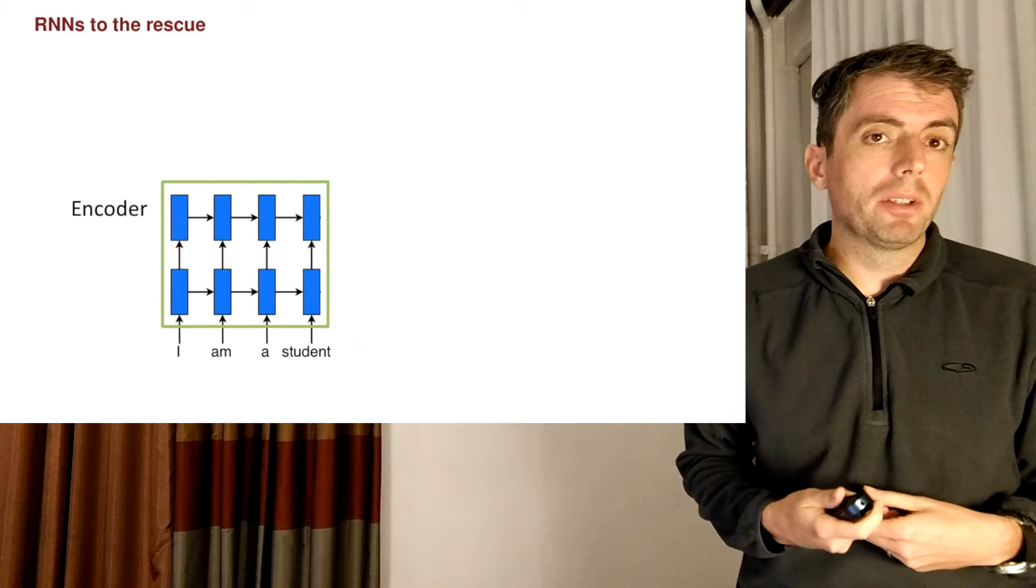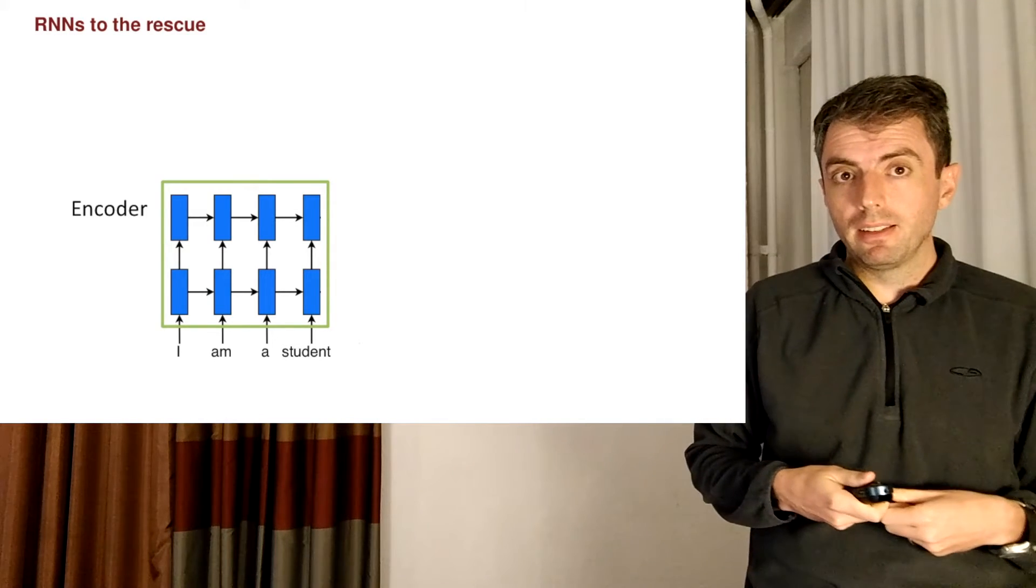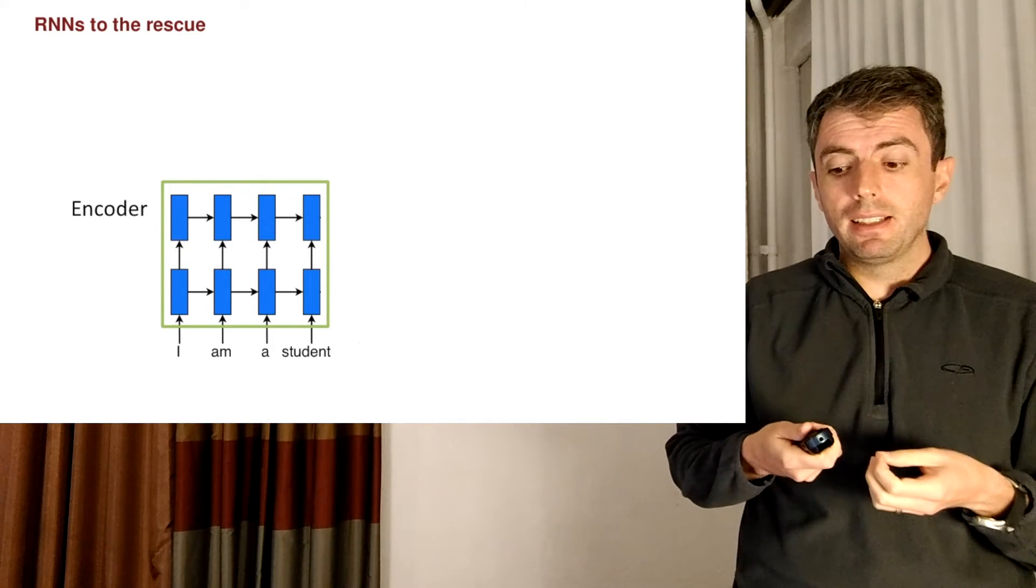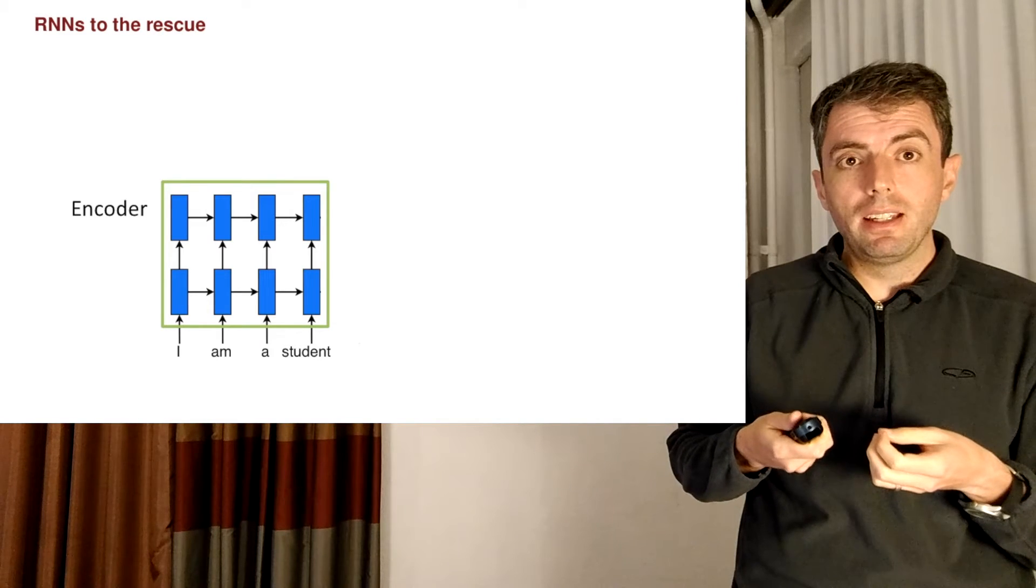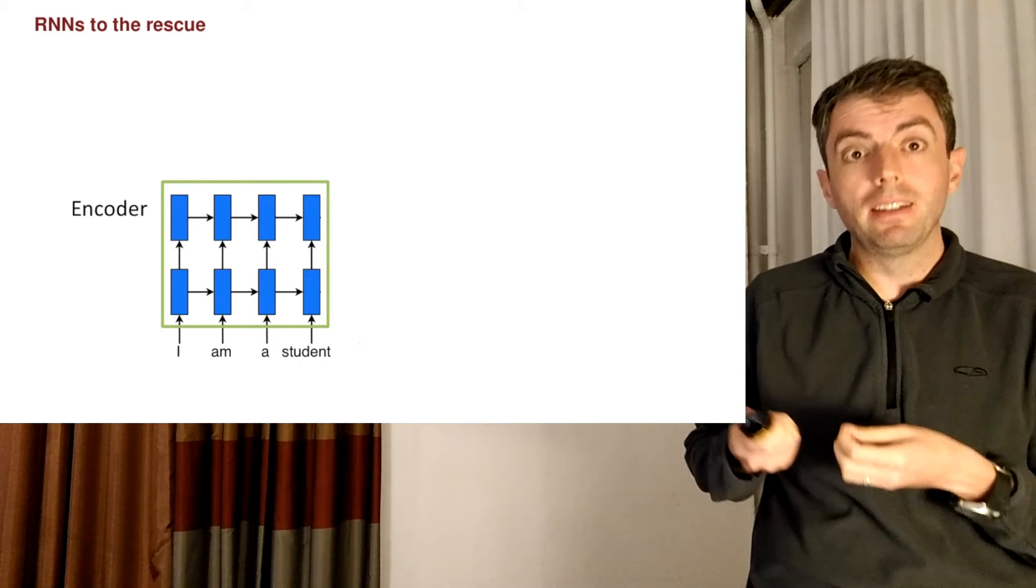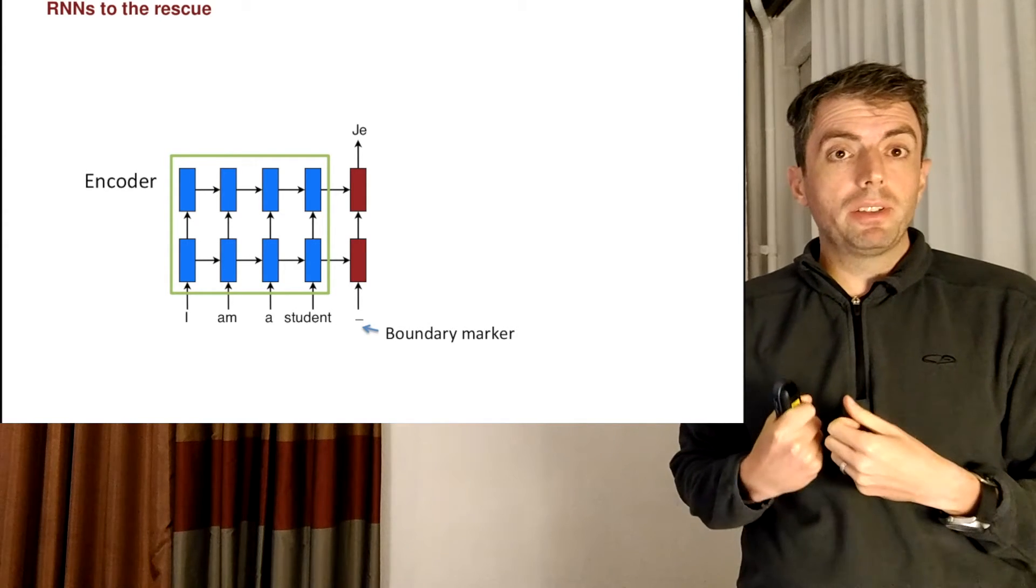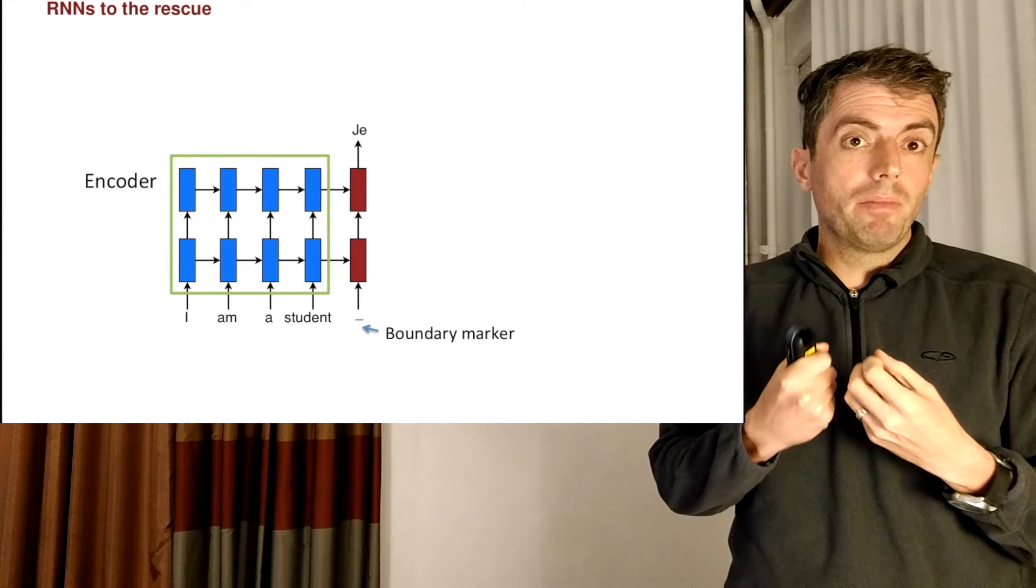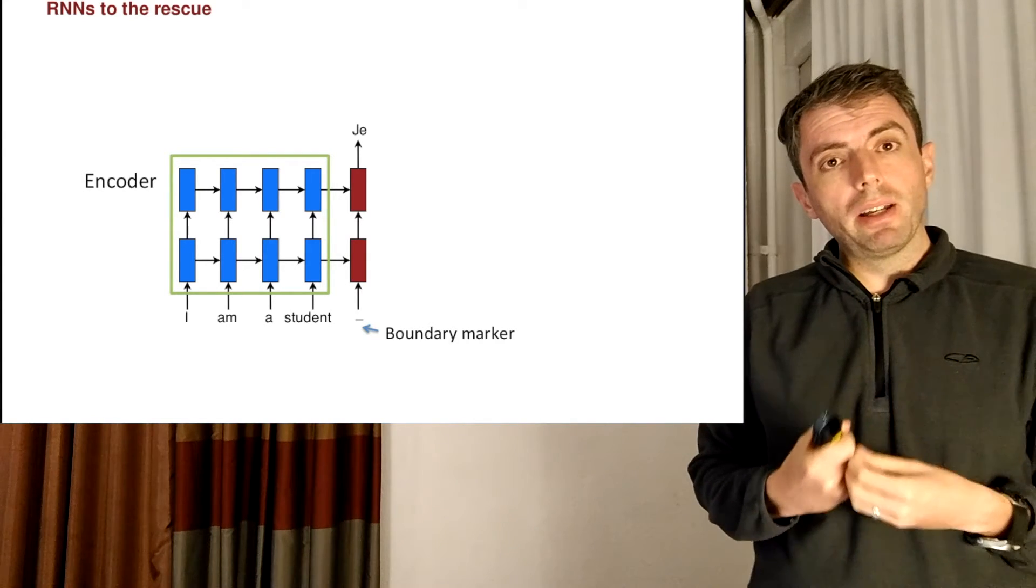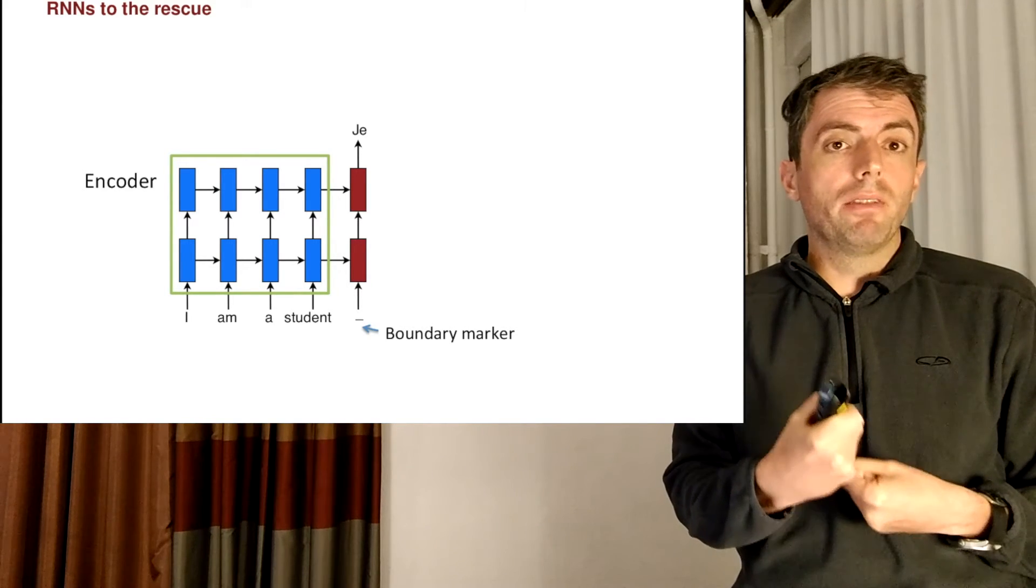And we're now going to take that hidden representation, and we're going to put it through another RNN, and we're going to generate the French sentence. And we first do that by having the output decode the sentence. So we'll call this part of the RNN the decoder. In this part of the decoder, we start with an input symbol that marks the beginning of the French sentence.